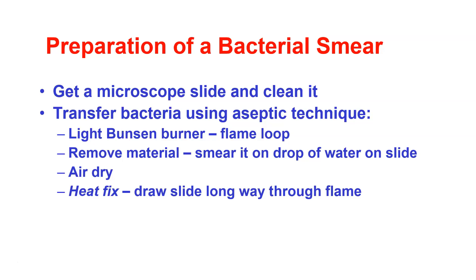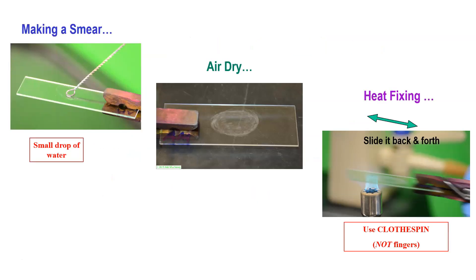One of the things we deal with is preparation of a bacterial smear — watch the video on that because it shows you exactly how to do it. Briefly: get a microscope slide and clean it, then transfer bacteria using aseptic technique. Light the Bunsen burner, flame the loop, let it cool, remove material from the culture, smear it on a drop of water on the slide, allow it to air dry, then heat fix it by drawing it through the flame three times. Your slide should look something like this in the end.